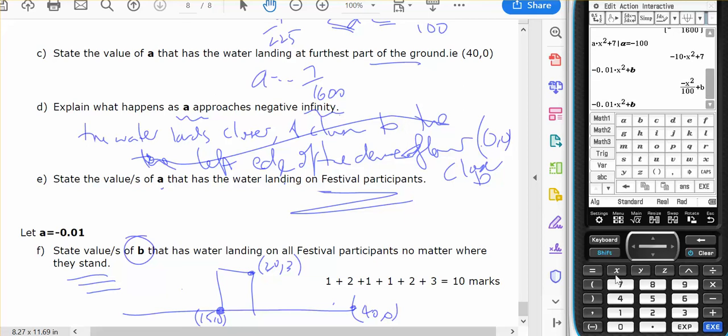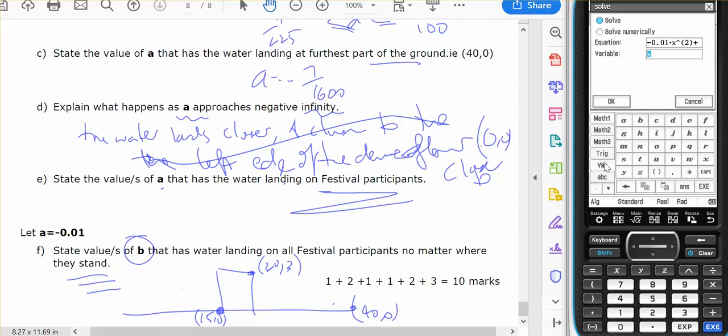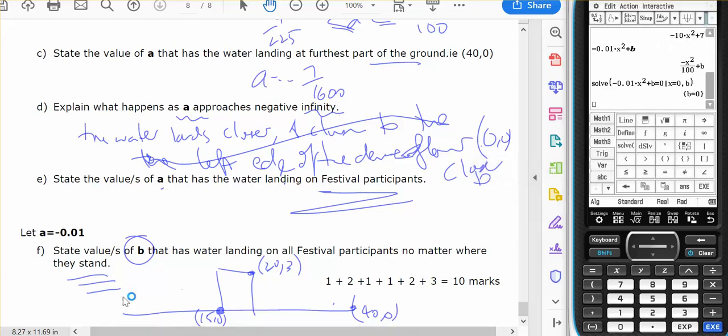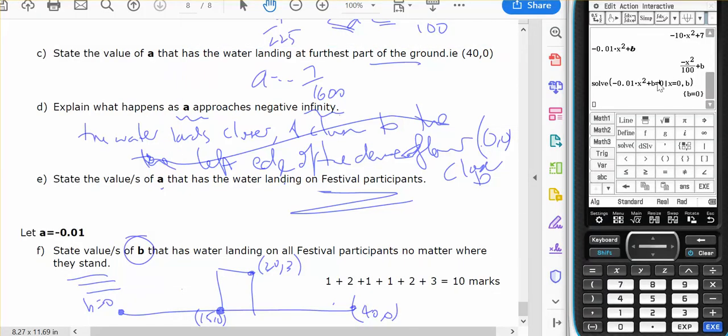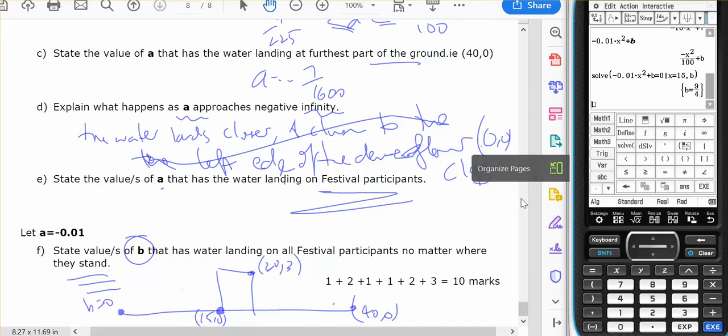So if it equals 0, given x equals 0, solve for b and b equals 0. So for it to land there b equals 0. For it to equal 0 when x equals 15, b equals 9 on 4. So for there b equals 9 on 4.